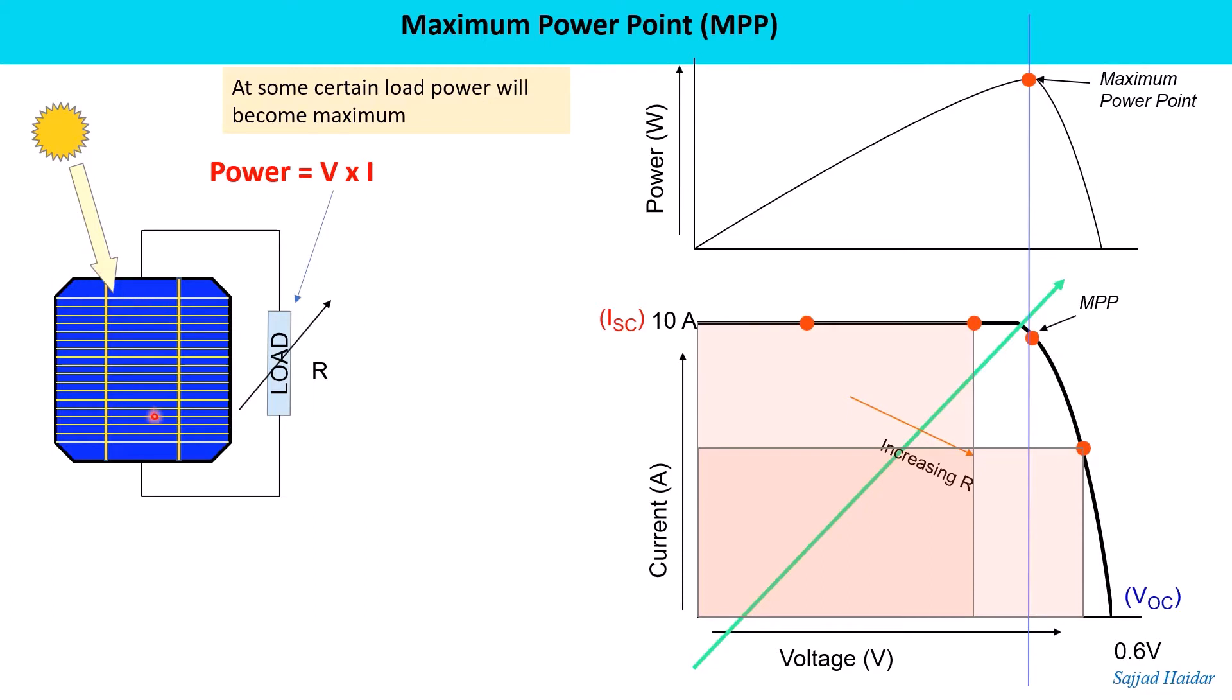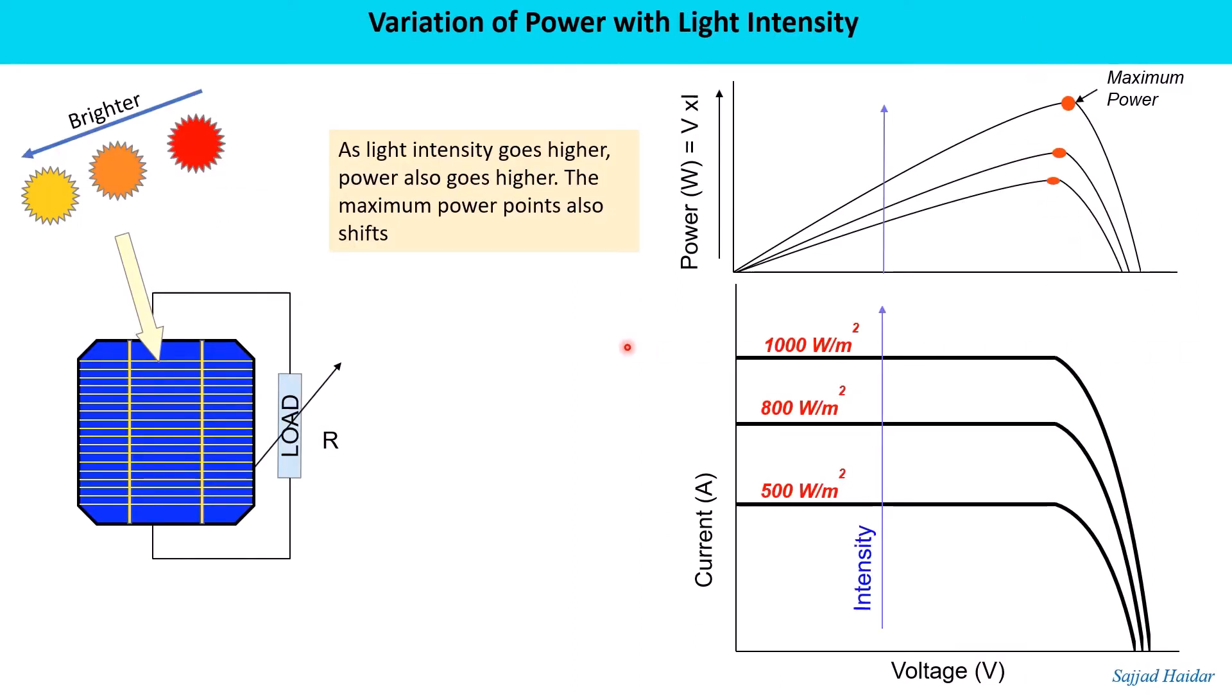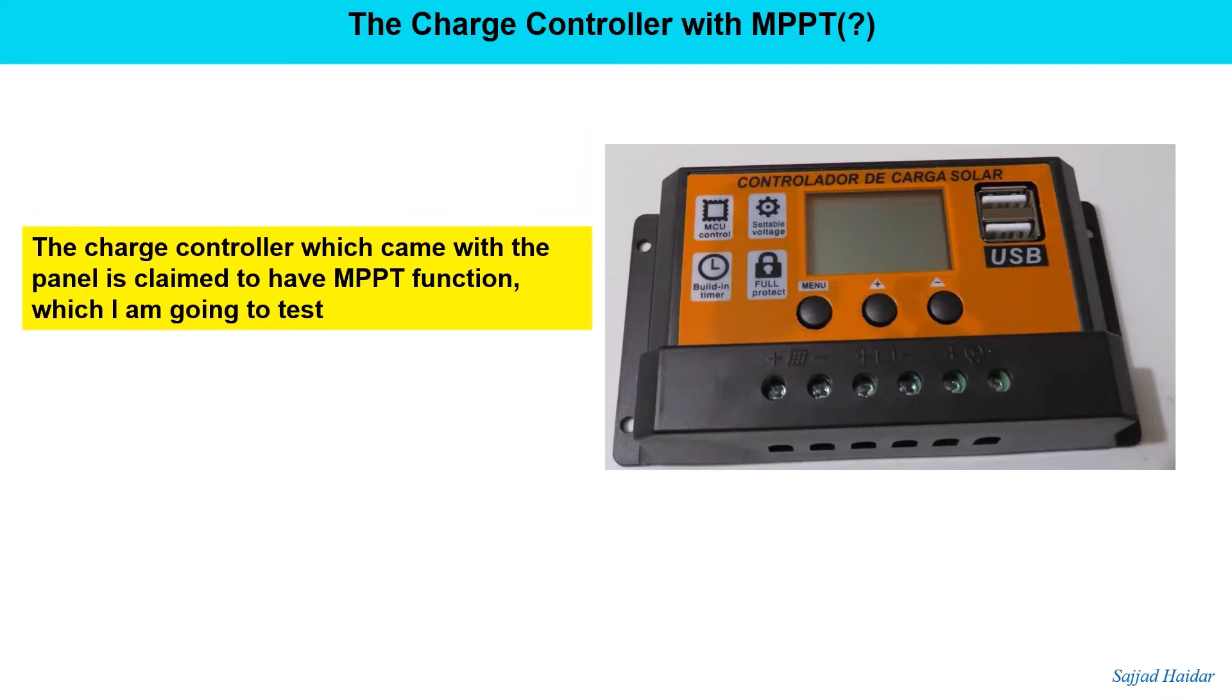So if the intensity changes, this maximum power point also changes. If a maximum power point tracker, or in short MPPT, is connected to a panel, it tracks the maximum power all the time under all circumstances and this power is delivered to the load.